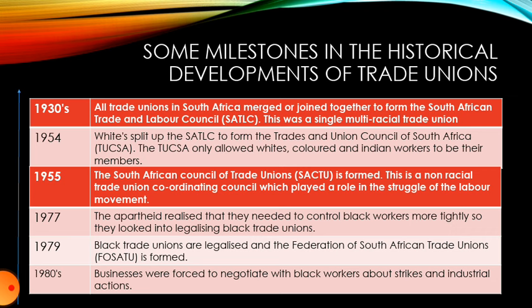In 1977, the apartheid government realised they needed to control black workers more tightly, so they looked into legalising black trade unions. In 1979, black trade unions were legalised and the Federation of South African Trade Unions (FOSATU) was formed.